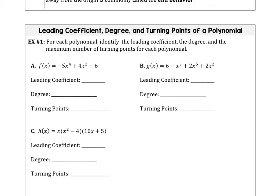In example one we want to practice just the basics. In example A, the leading coefficient is the constant number in front of the highest degree term, so negative five is our leading coefficient. The highest degree term is x to the fourth power, making this a fourth degree polynomial. With n minus 1 turning points, the turning points would be 4 minus 1, or 3. You can go through examples B and C to locate the leading coefficient, degree, and turning points.